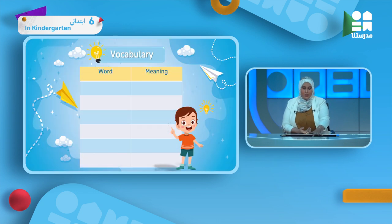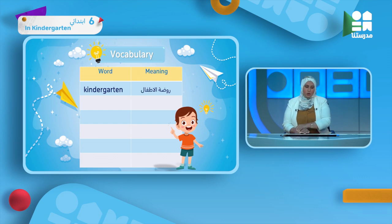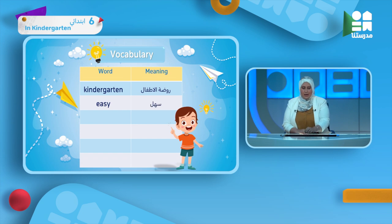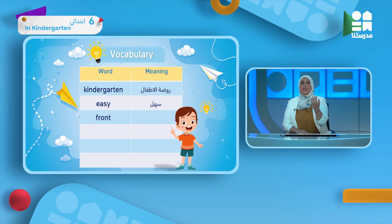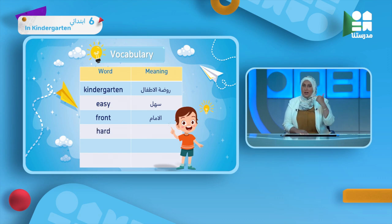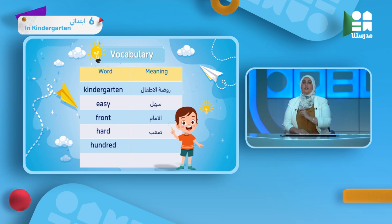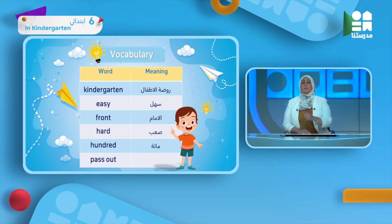Moving to vocabulary. Kindergarten means KG — روضة الأطفال. Easy means سهل; its opposite is hard, meaning صعب. Front means الأمام — 'come to the front.' Hundred means مية — 100. Pass out means يوزع — to distribute, as in 'pass out the homework.'